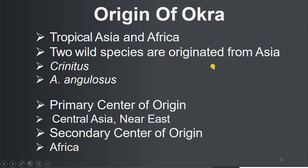Origin of okra: it is of tropical Asian and African origin. Two wild species originated from Asian countries — Abelmoschus quintus and Abelmoschus angulosus. The primary center of origin is in Asia, with a secondary center of origin in central Asia, the Near East, and Africa.